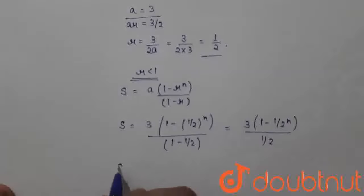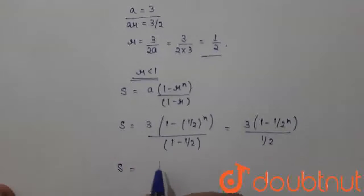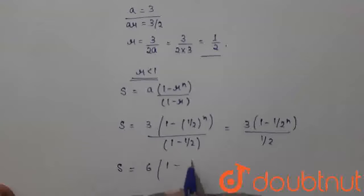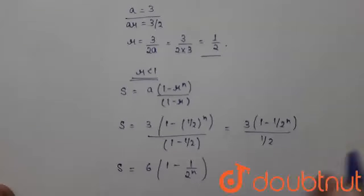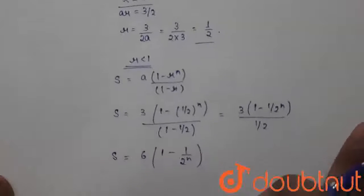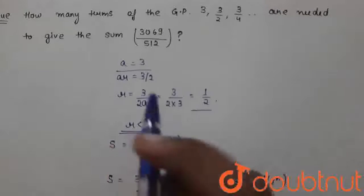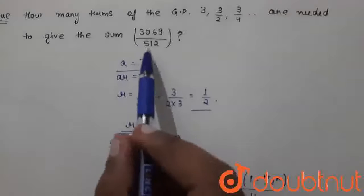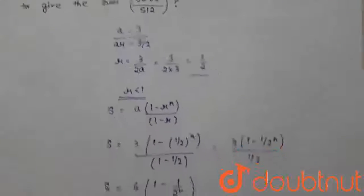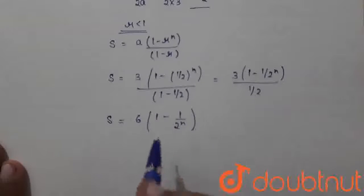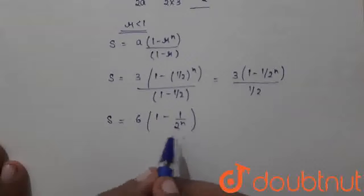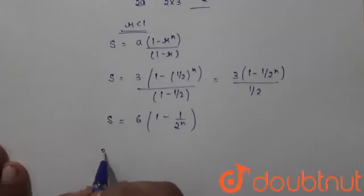And we will get this. The formula for the sum of the first n terms will come as 6 times (1 minus 1/2^n). Now we have to find out how many terms of this GP are needed to give the sum 3069 upon 512. So we have to find out the value of n for which S will be 3069 upon 512.